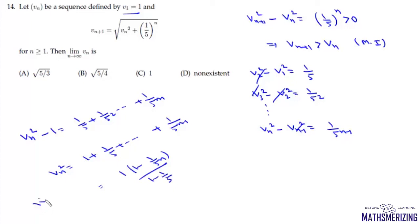Taking the limit as n tends to infinity, this value will be simply 5 by 4. So the limit as n tends to infinity of vₙ² is 5 by 4, then the limit of vₙ will be simply the square root of 5 by 4, and that's your option B.